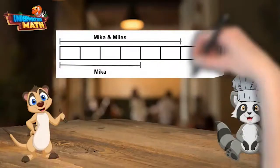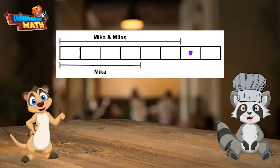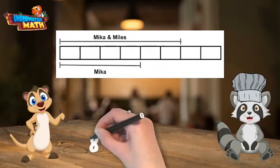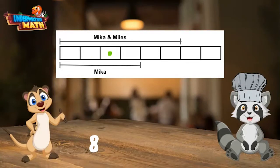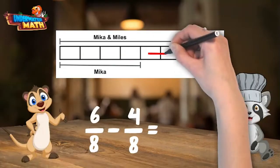My friends Mika and Miles shared dessert. This model shows the amount of dessert they ate together and the amount that just Mika could eat. Can we use this model to find out what fraction of the dessert Miles ate? Let's first see how many total pieces are in the dessert: 1, 2, 3, 4, 5, 6, 7, 8. Mika and Miles ate 6 of those pieces together, but the model also shows Mika ate 4 of them herself. This means Miles ate 2 pieces, or 2/8 of the dessert.